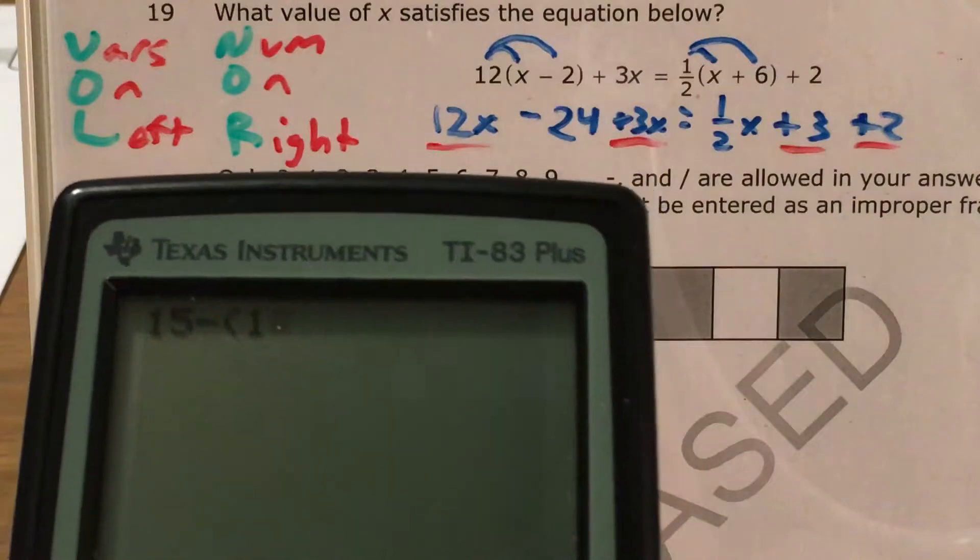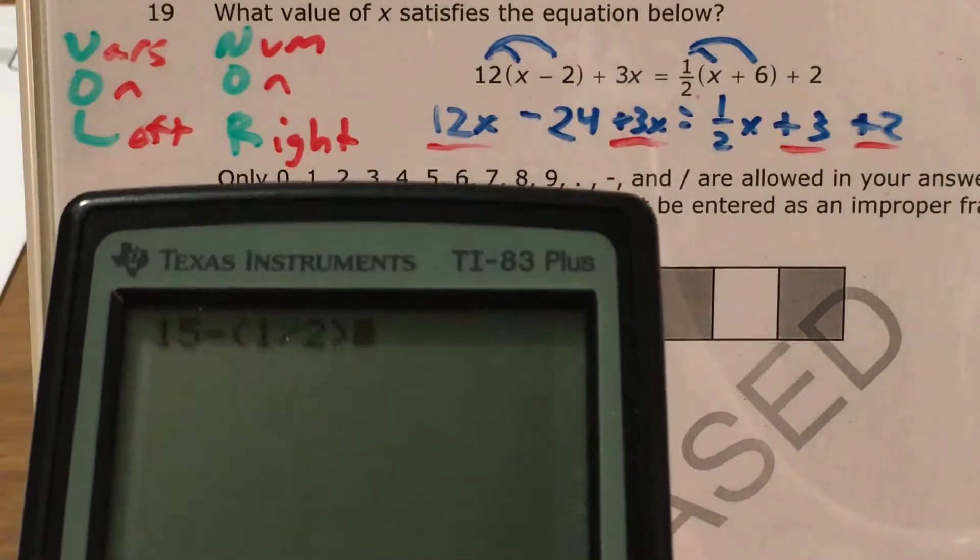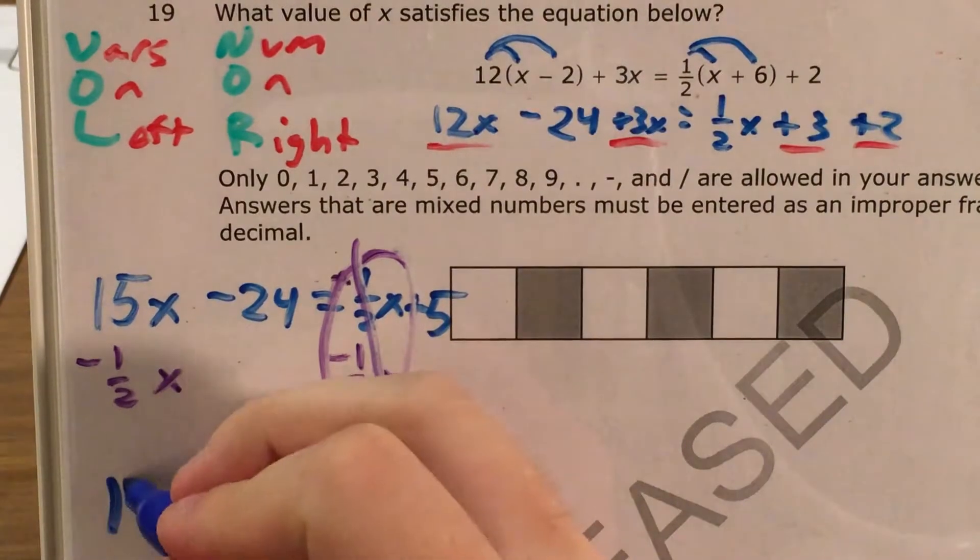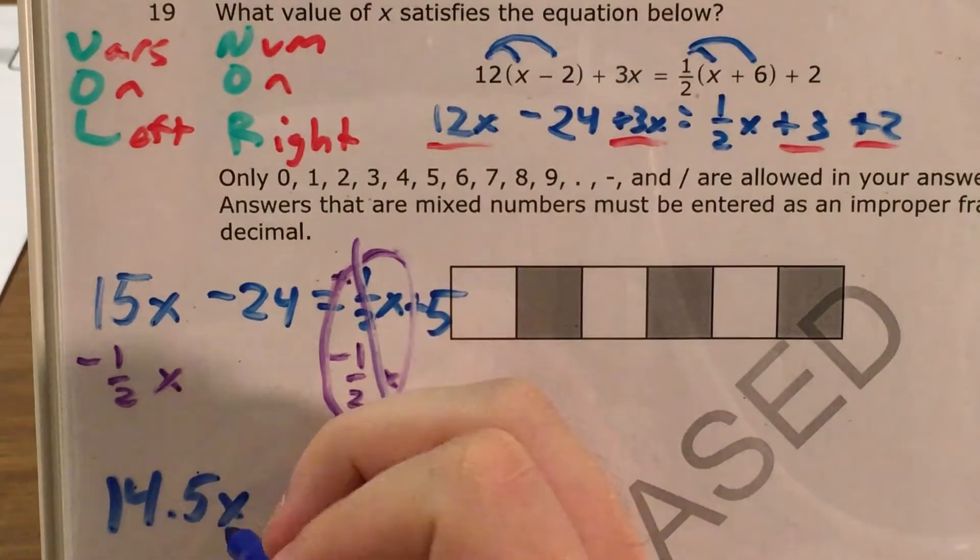Then 15 minus 1 half, and I'm putting my 1 half in parentheses to make sure my calculator does what I want it to, and that's 14 and a half or 14 and 5 tenths. So on my left side I'm left with 14.5x.